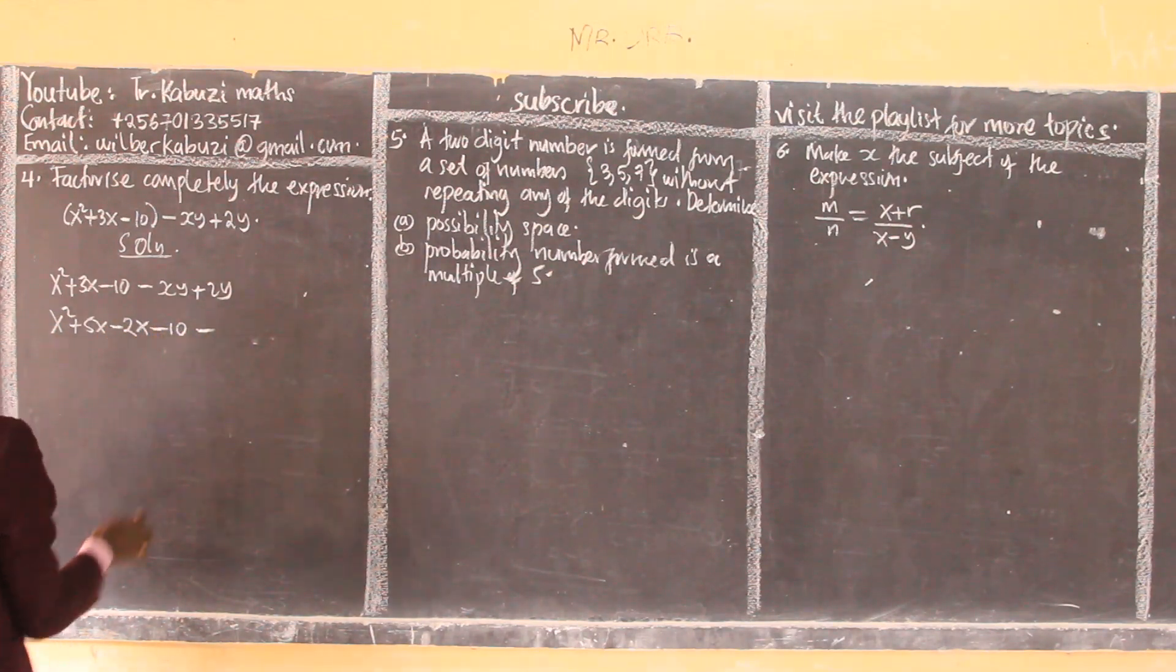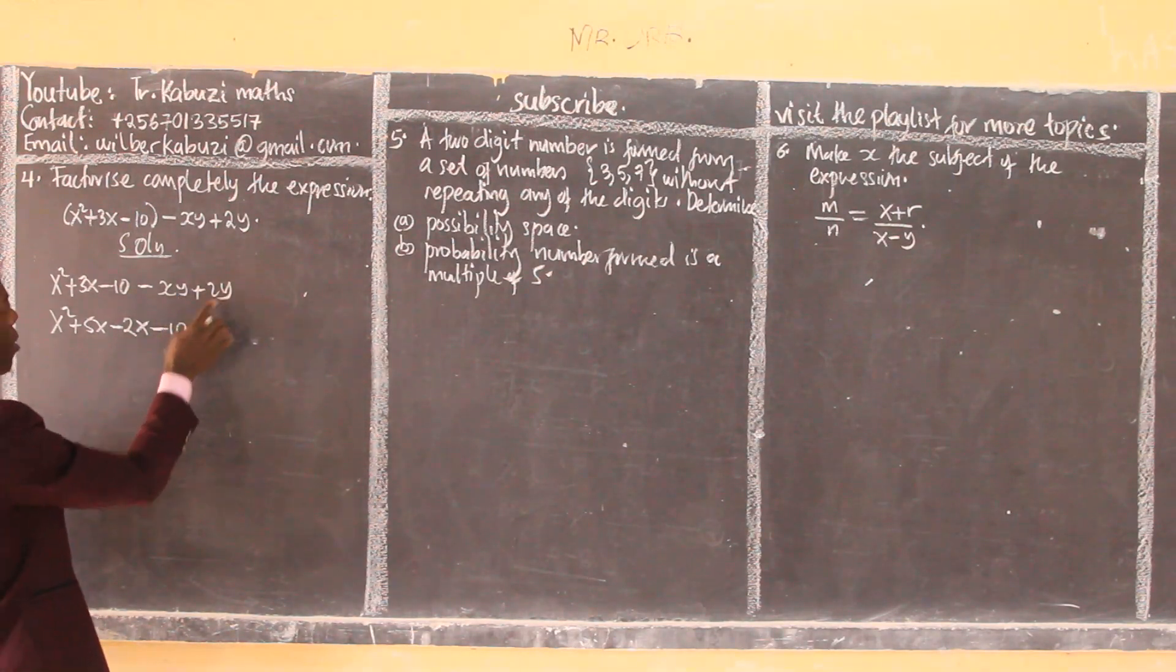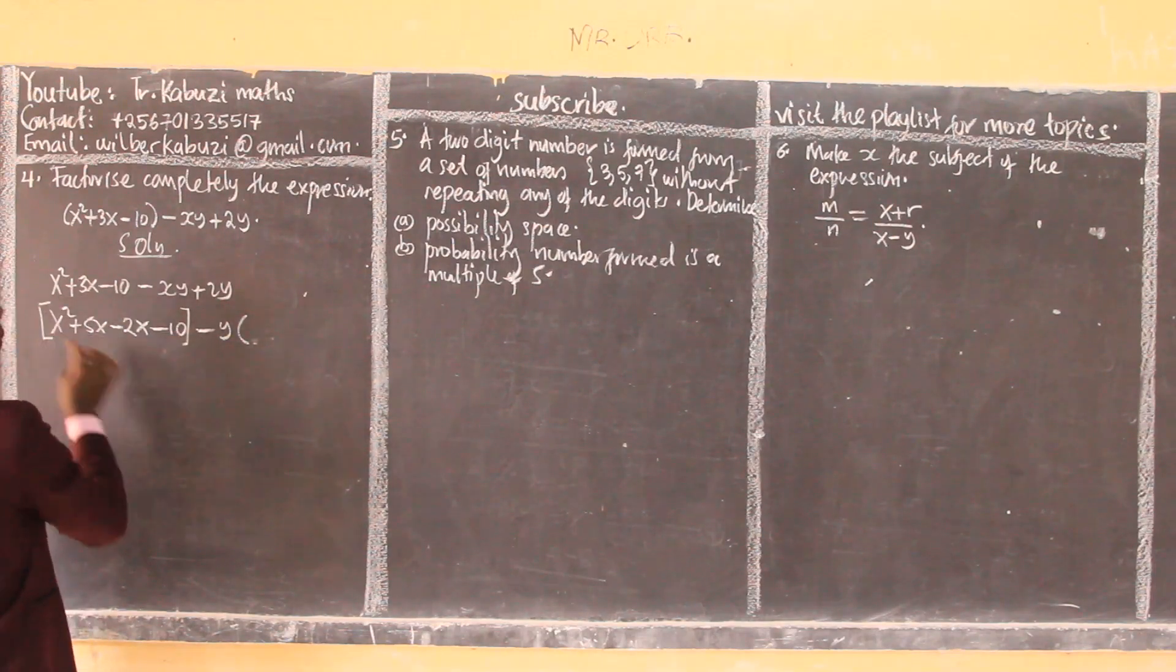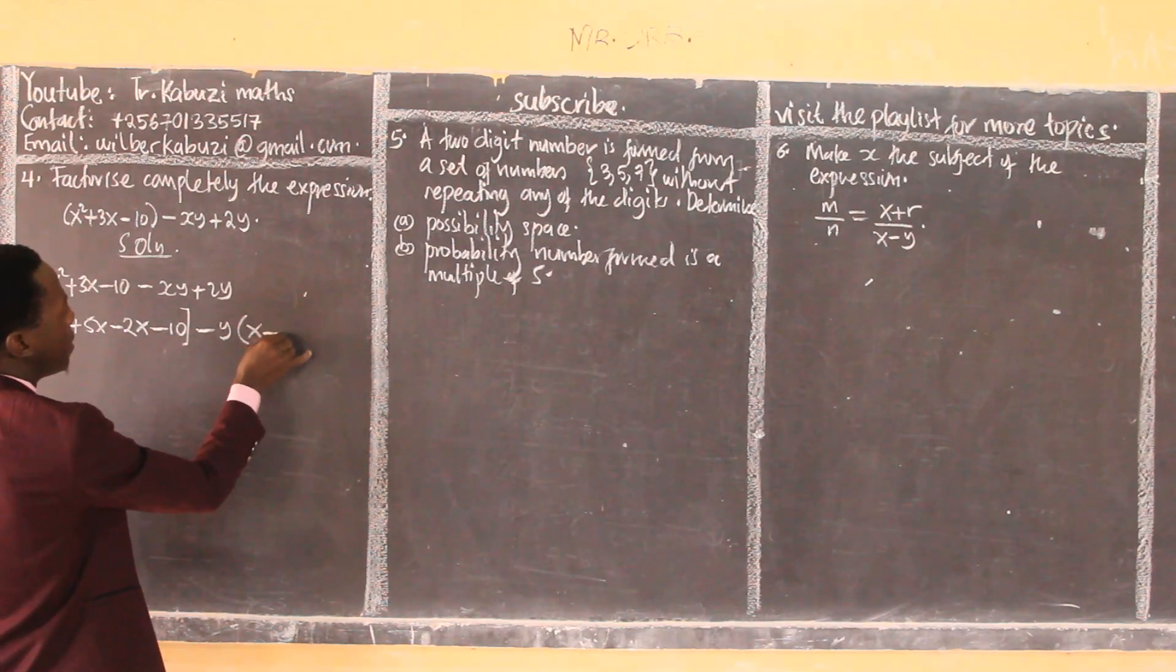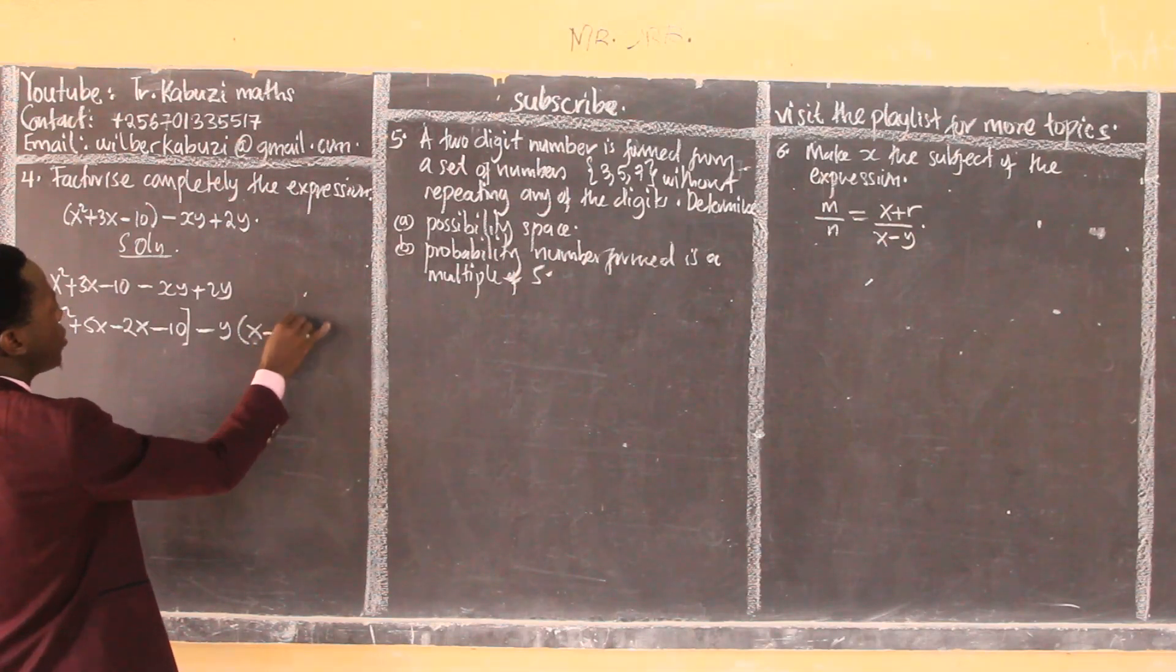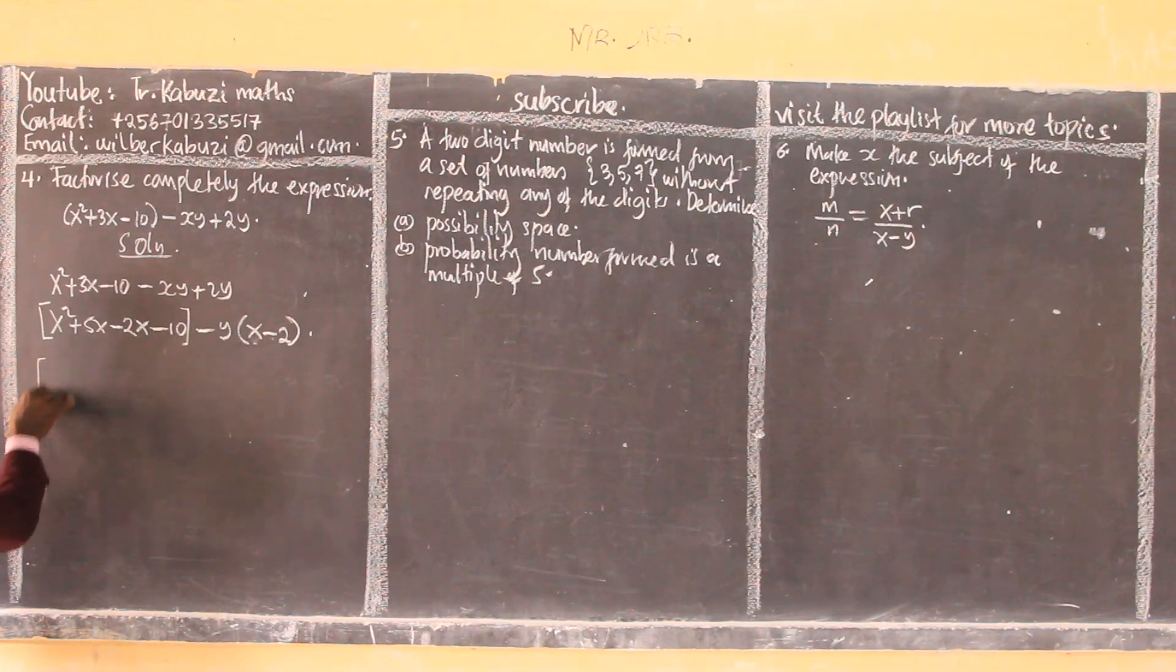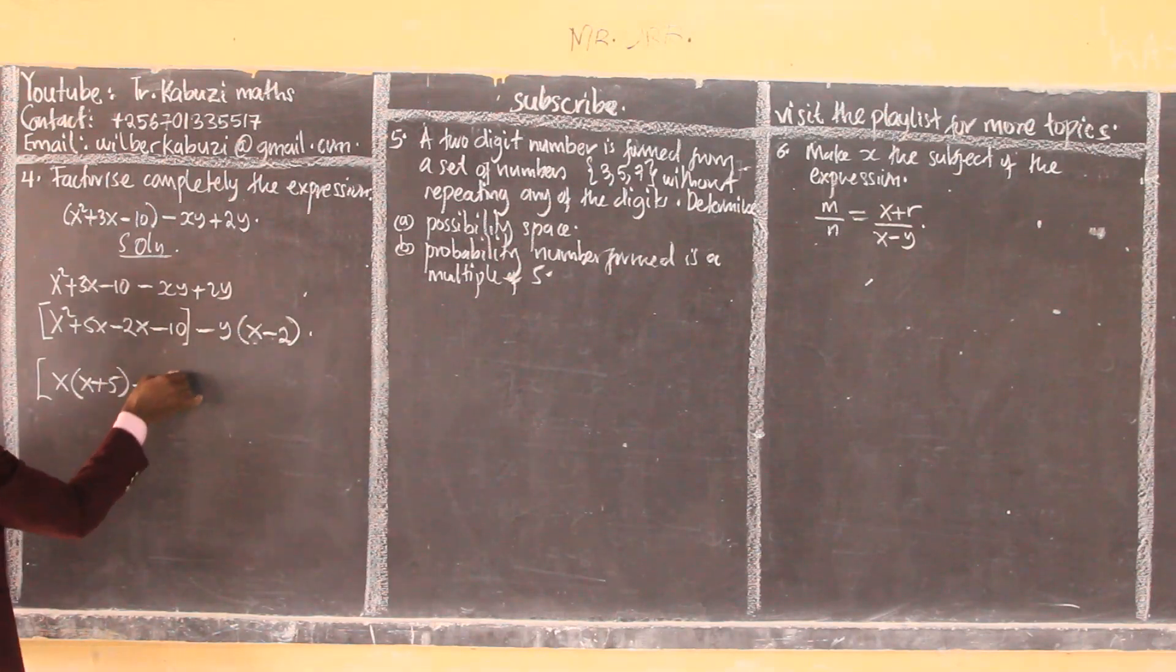...minus 2x minus 10. Here I'm seeing y and y is common, so if I factorize out minus y I'll be having x minus 2. So here I factorize out x into x plus 5. Moving the minus 2, I have x plus 5.